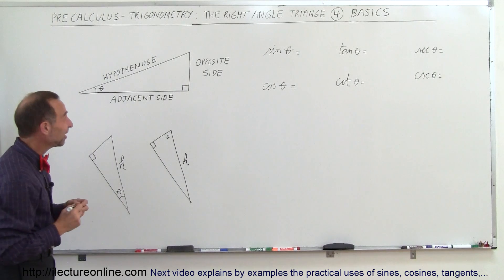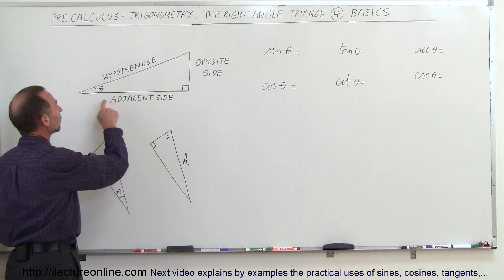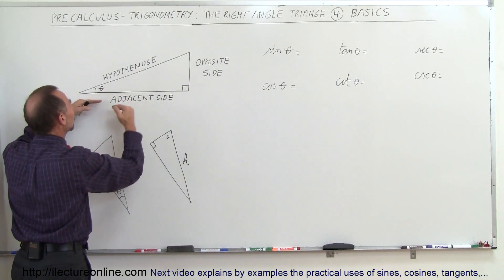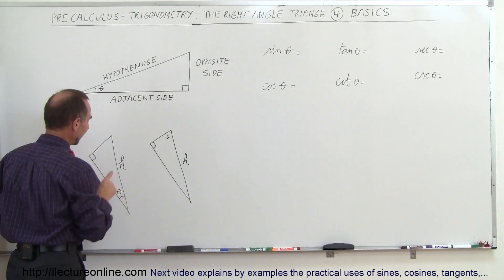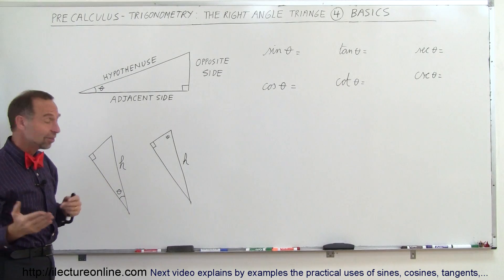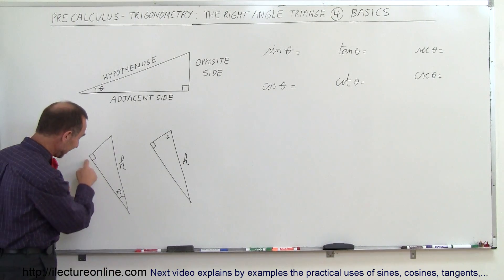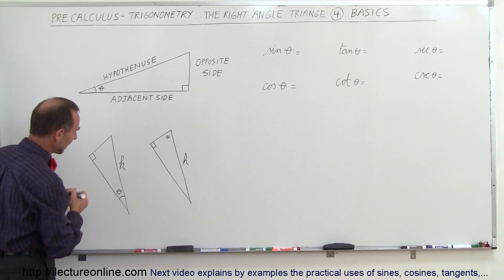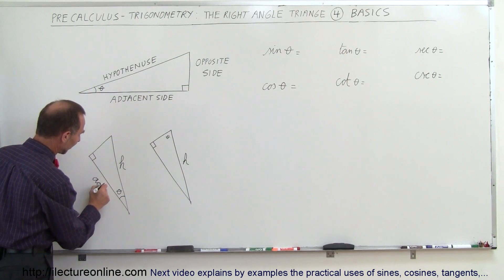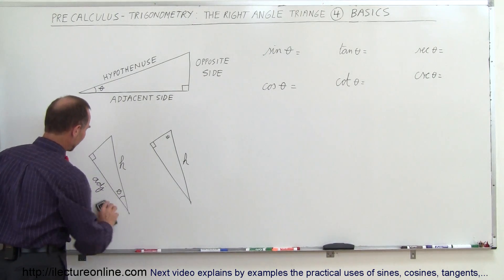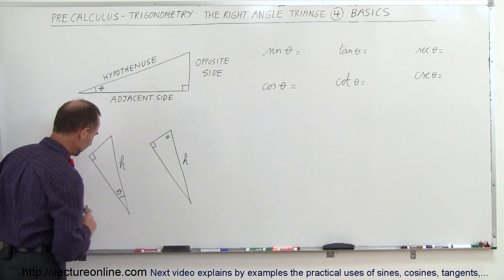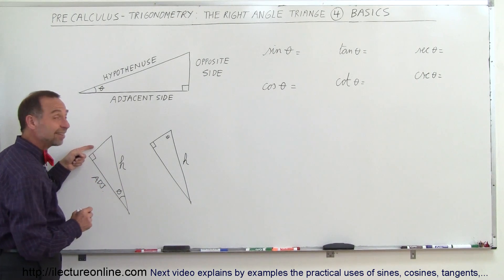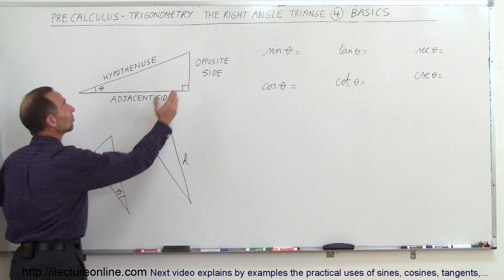Now what about the adjacent side? We call this the adjacent side because it is adjacent to the angle — it touches the angle. In this particular case, here's the angle and this side right here is adjacent to it, so we call this the adjacent side.